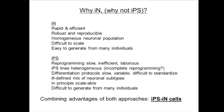Compared to iPS cells, scaling this conversion is not trivial because we are working with primary cell types — dermal fibroblasts proliferate to some degree but are primary somatic cells and will eventually senesce, unlike iPS cells which can go on indefinitely. Once the cells are converted, they are post-mitotic, so there is no way to scale neurons once that happens.